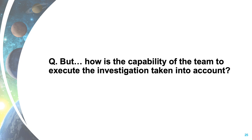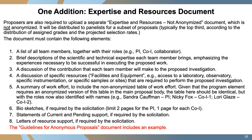How is the capability of the team to execute the proposed investigation taken into account? This is where we provide details for the expertise and resources, not-anonymized document. This document will be distributed to panelists for a subset of proposals — typically the top third, according to the distribution of assigned grades and projected selection rates. It must include a list of team members with their roles, brief descriptions of each team member's scientific and technical expertise, a discussion of each member's contribution, a discussion of specific resources required, a summary of work effort including a not-anonymized work effort table, biosketches if required, statements of current and pending support if required, and letters of resource support if required. The guidelines document includes a worked example.